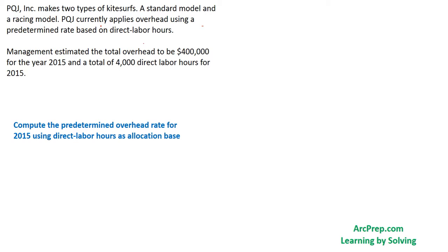Let's start by looking at the problem and go over volume-based costing. We have a manufacturer of kite surfers; they manufacture two models: standard and racing. They apply overhead using a predetermined rate based on direct labor hours. The total overhead estimated for the year 2015 is four hundred thousand dollars and the total direct labor hours is estimated to be four thousand hours.